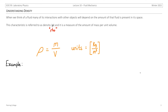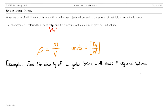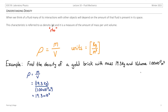Let's look at an example for density. Find the density of a gold brick if the mass is 19.3 kilograms and the volume is 1×10⁻³ cubic meters. We grab our formula rho equals m divided by v, input our values of 19.3 kg and 1.00×10⁻³ m³, giving us 1.93×10⁴ kilograms per meter cubed in scientific notation.